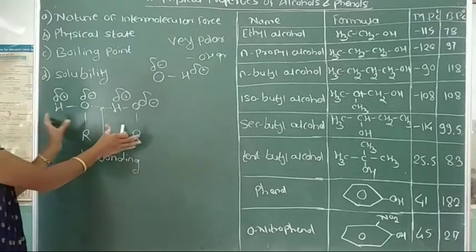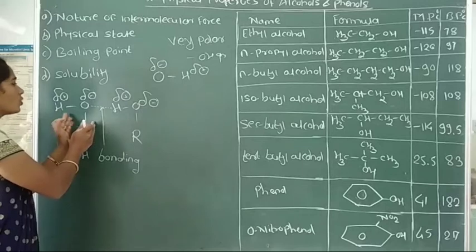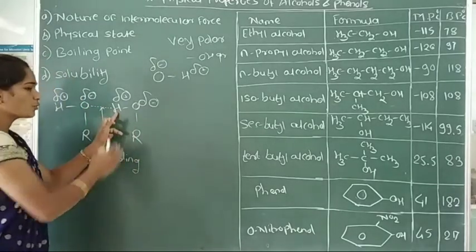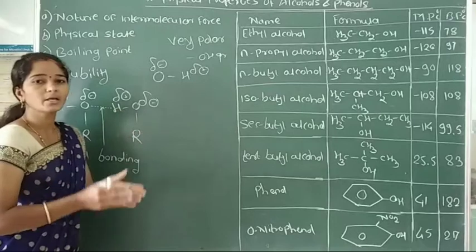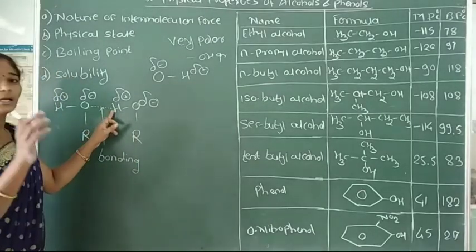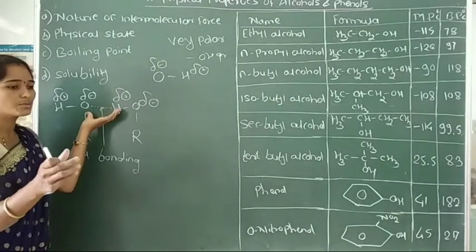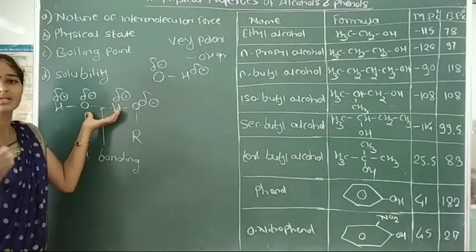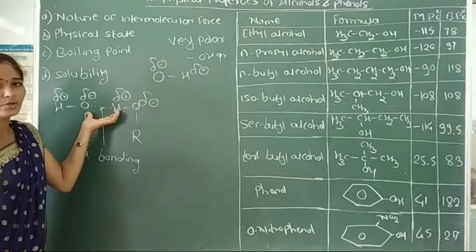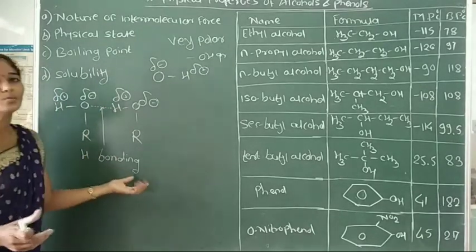In two alcohol molecules, one alcohol has oxygen and the second alcohol has hydrogen. So they form a hydrogen bond. Therefore, this bond is a strong intermolecular force. It is called as hydrogen bond.